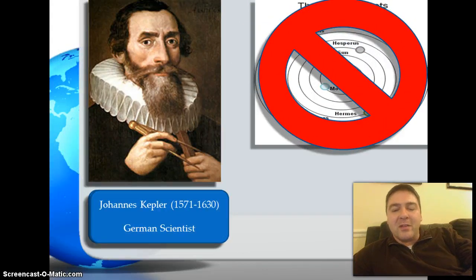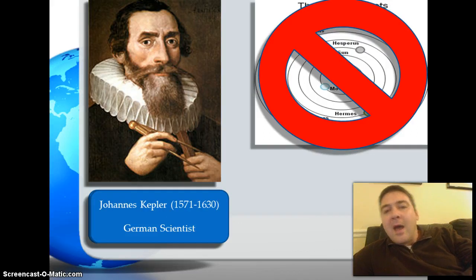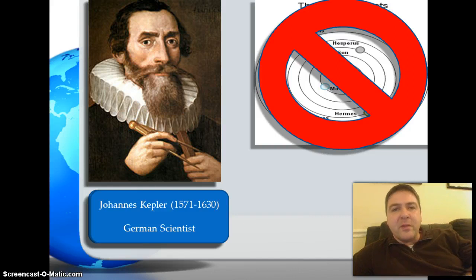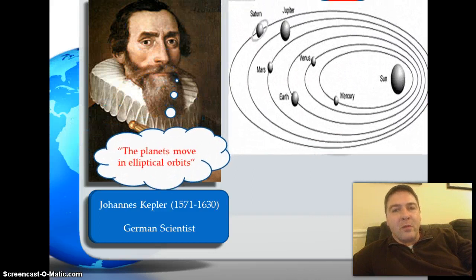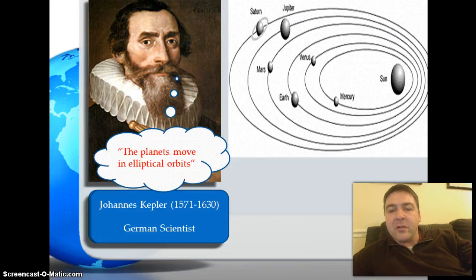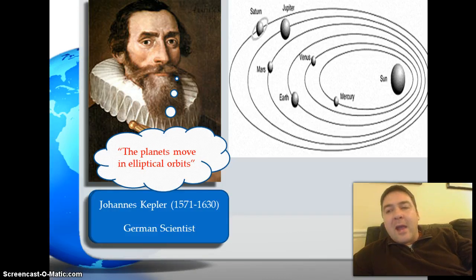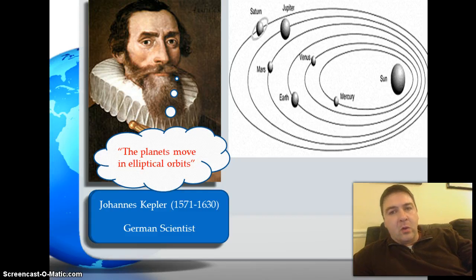Just as Copernicus replaced the old way of thinking, Kepler replaced it as well. There were many movements of the planets that just didn't make sense if they were moving in perfect circles. Kepler replaced the circular motion of the planets with the ellipse — almost like an oval, a squashed circle. We see a more familiar pattern of the planets moving in elliptical orbits, spelled out in the laws of planetary motion.